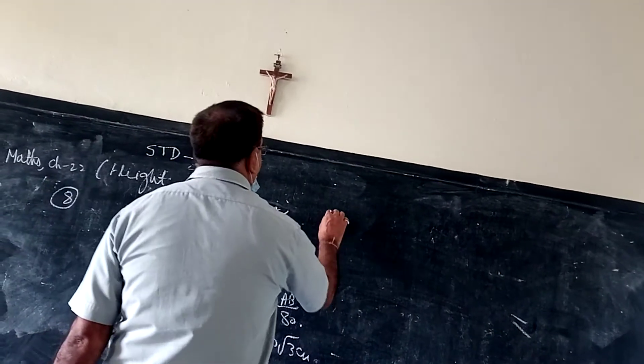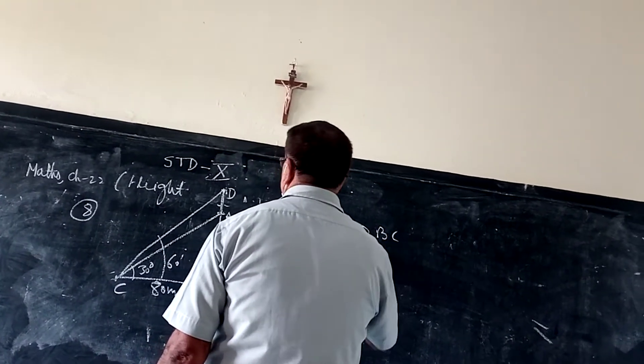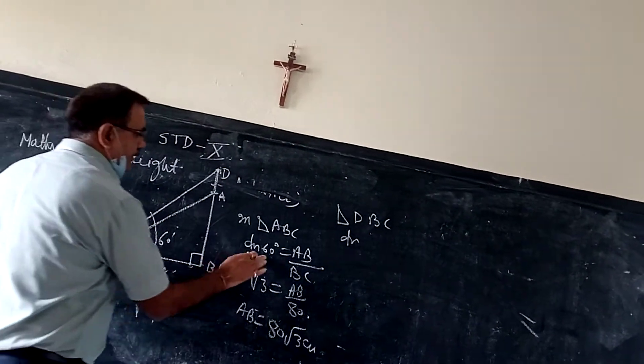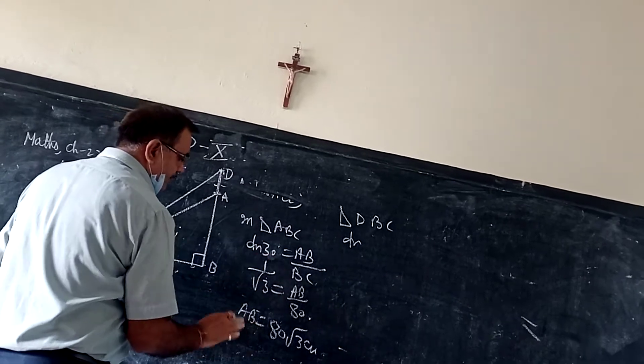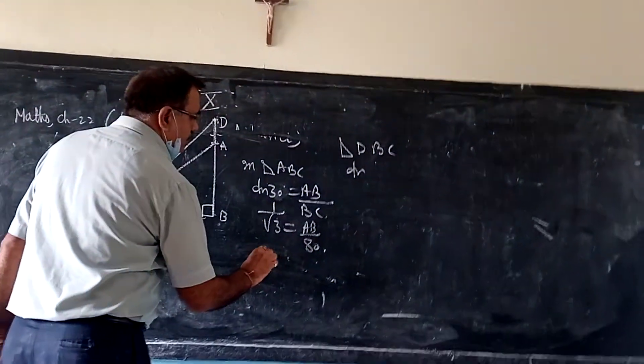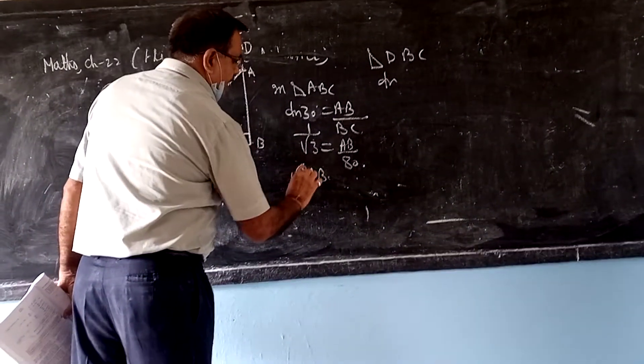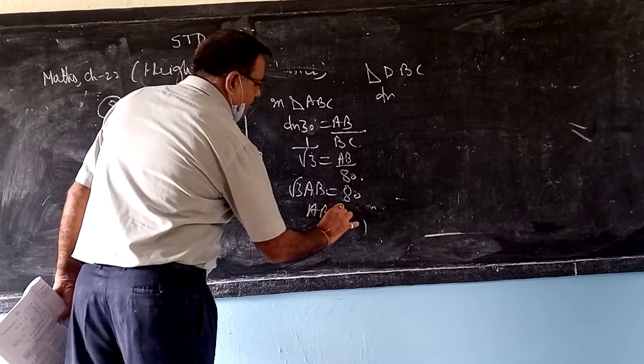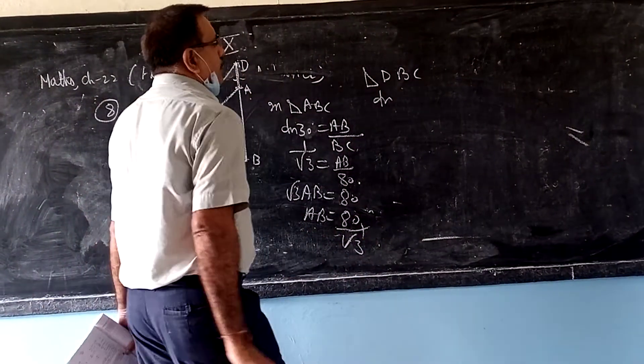In right angle triangle ABC, tan of angle ACB. This angle is given as 30 degrees. Tan 30 is 1 by root 3. AB by BC, so AB divided by root 3 equals 80. AB equals 80 divided by root 3.